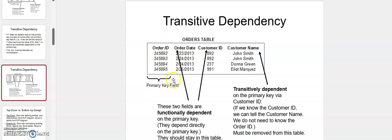Let's look at an example. We have an orders table with order_id, order_date, customer_id, and customer_name. In this table, order_id is the primary key and customer_id is a foreign key — a non-primary attribute — that is dependent on order_id, because when an order is placed we want to know who placed it.